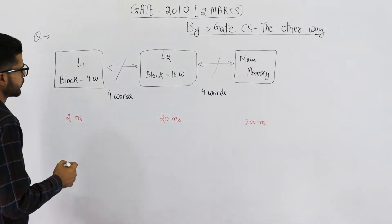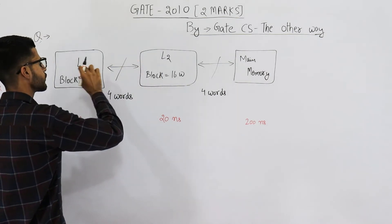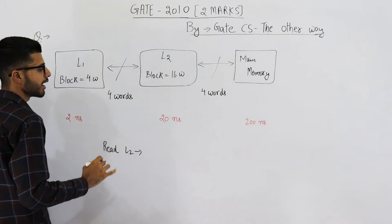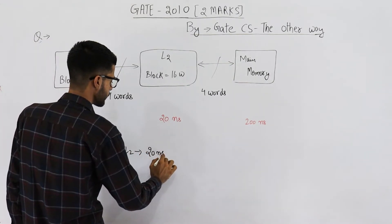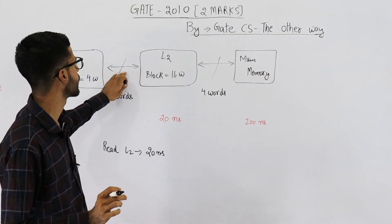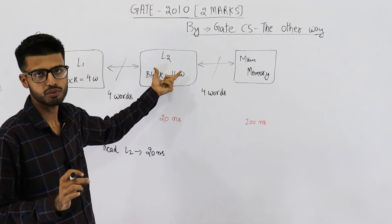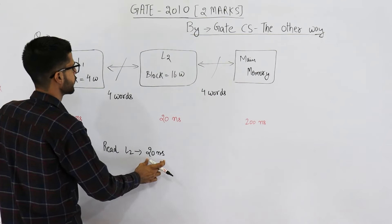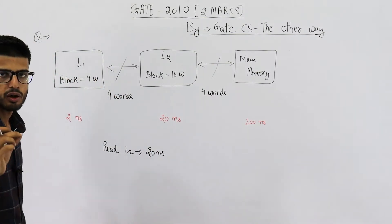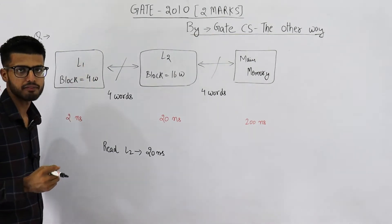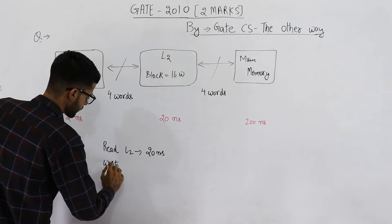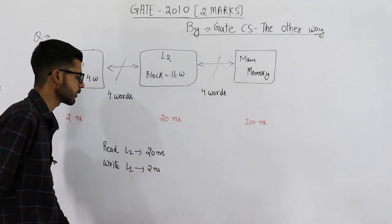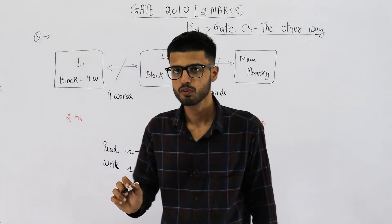Let's solve this one. We need to transfer a block from L2 to L1. That means we'll read L2, which will take 20 nanoseconds. Immediately after reading it, the data will be placed onto the bus and forwarded. Then L1 cache will be given a write signal — that means L1 cache will copy everything from the bus, which will take 2 nanoseconds. So in total, that is 22 nanoseconds. The answer to the first part is 22 nanoseconds.